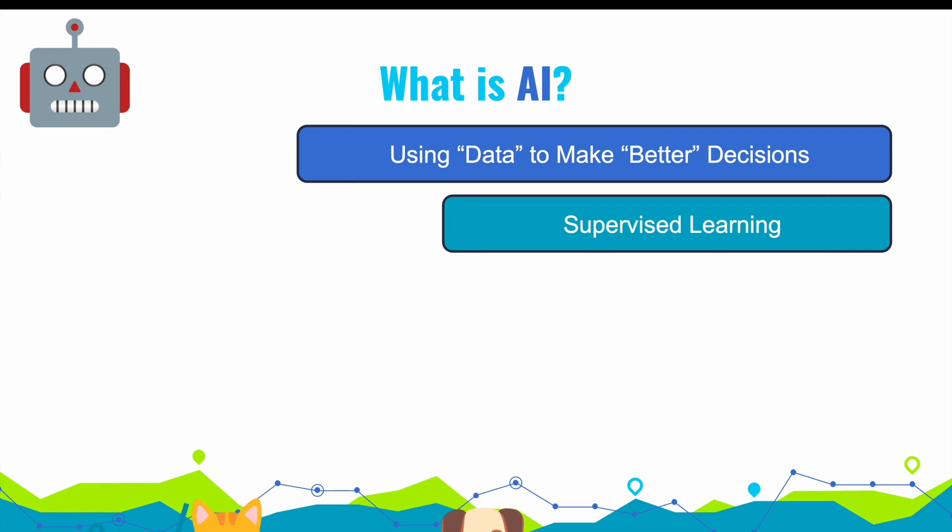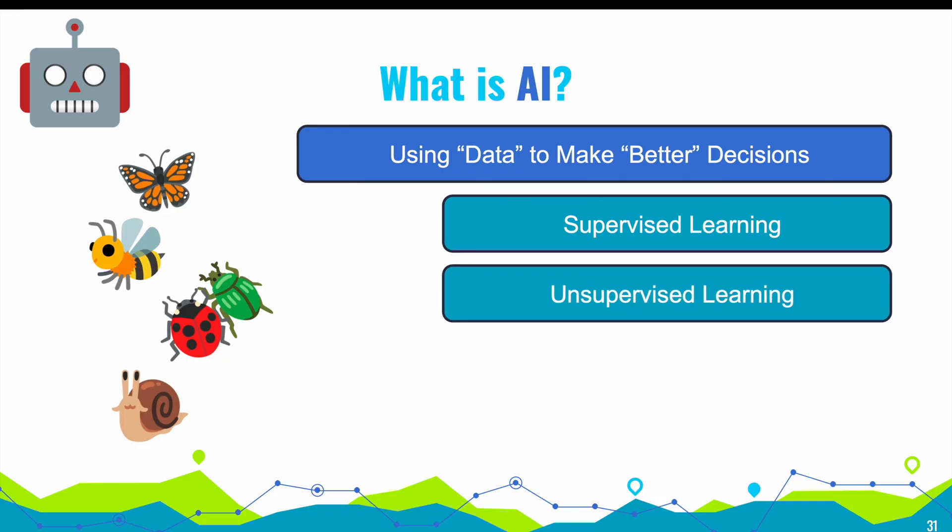Next, we have unsupervised learning. This is different from supervised learning in that we don't have a teacher. The AI needs to figure things out all by itself without examples. Clustering is a common unsupervised learning task. Basically, the AI groups individuals based on their properties.